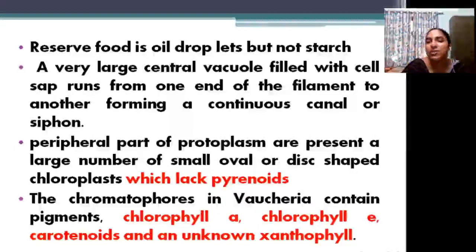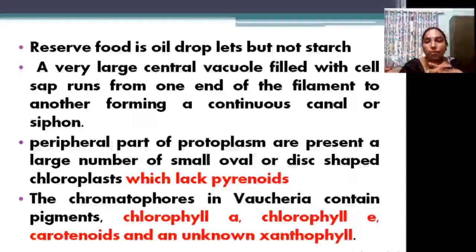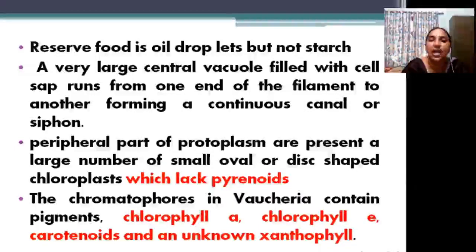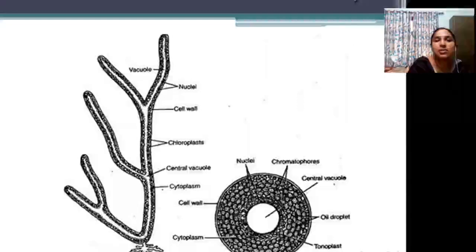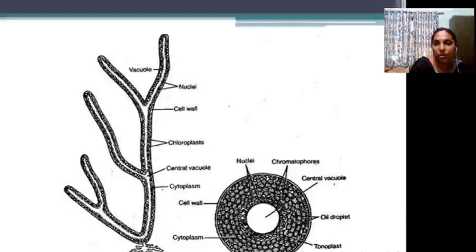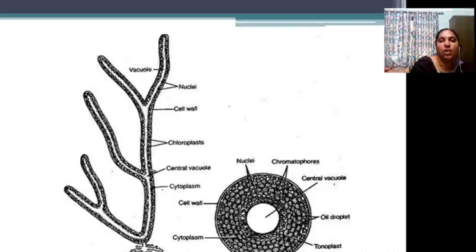Now reserve food. We already studied food material stored in pyrenoids, but here pyrenoids are absent — very important. Food materials are oil drops, not starch. There is another peculiar feature: a large central vacuole is present throughout. The central vacuole is surrounded by protoplasm, and the protoplasm contains chloroplasts and oil. This is the structure of the Vaucheria filament — branched siphons, multinuclear, with a vacuole at the center and numerous nuclei and chloroplasts just outside it.